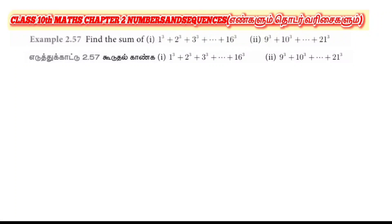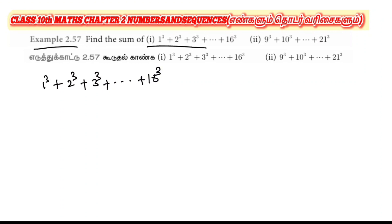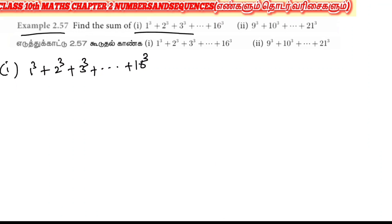Dear students, consider example 2.57. We have 1 cube plus 2 cube plus 3 cube, likewise up to 16 cube summation. The formula for the sum of cubes of first n numbers is n into n plus 1 by 2, to the whole square.